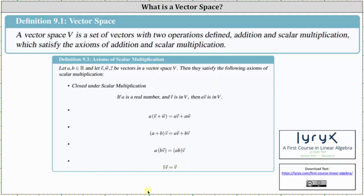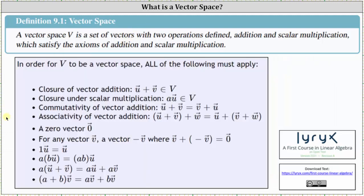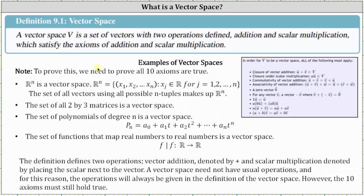All 10 of these axioms must be satisfied in order for a set of vectors to be a vector space. This slide shows all 10 axioms in one list. Now let's take a look at some examples of vector spaces. To prove these are vector spaces, we would have to go through all 10 axioms and show they are true.